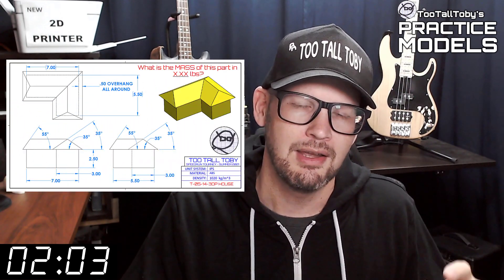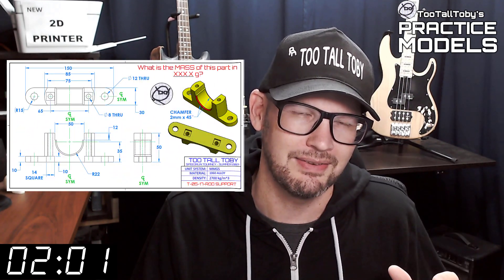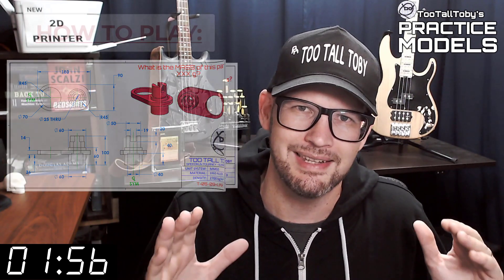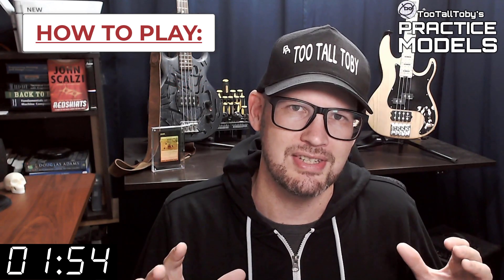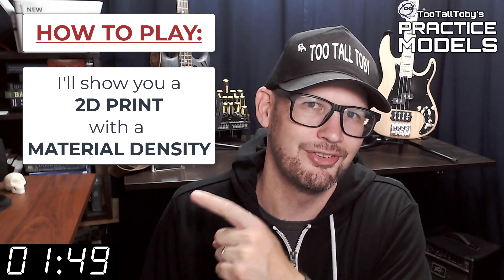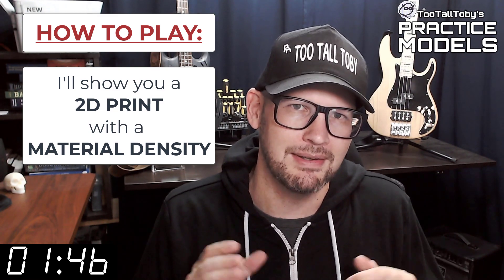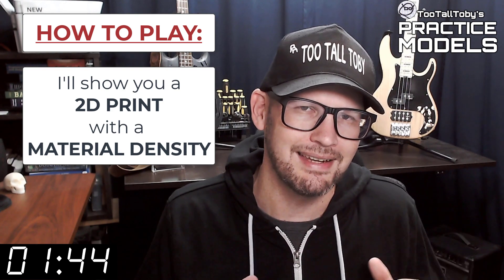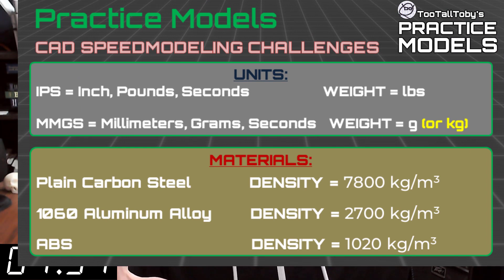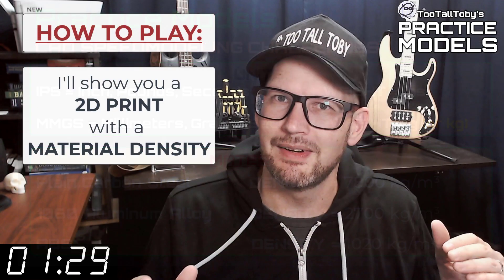The goal of this video series is to provide you with good quality 2D prints that have all the dimensions and information you need to create a 3D model. Here's how these challenges work: I'm going to show you a 2D print. When this timer gets to zero, on that print you're going to see a material property and a material density — it's going to be one of these three material properties. So take a moment, grab a screen capture of what's on the screen right now, and be sure that your materials in your library match these properties.